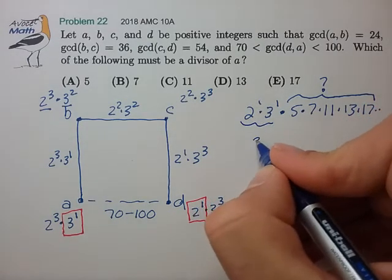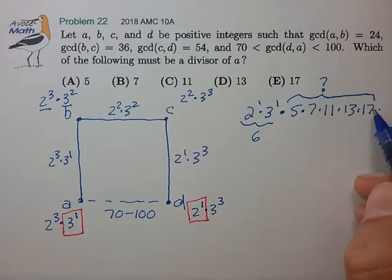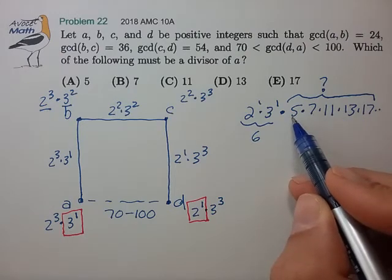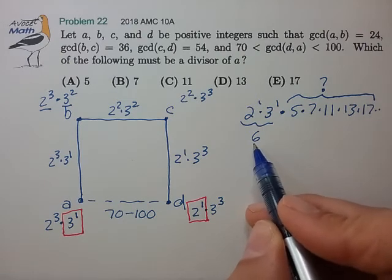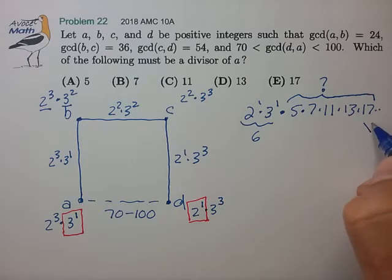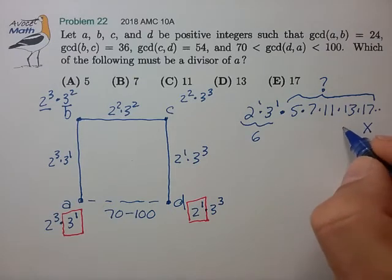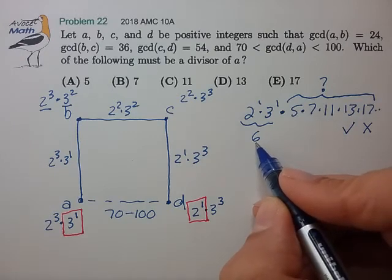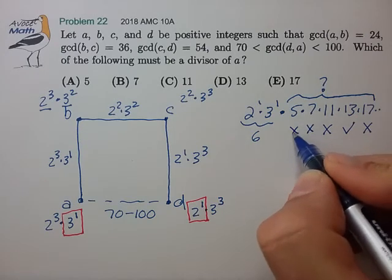Now 2 times 3, that's 6. Let's consider introducing these additional factors one at a time. If we introduce the factor of 17 all by itself, 17 times 6 is 102, so that's too large. If we introduce 13 all by itself, that does give us a greatest common divisor in the proper range, so that's a possibility. If we introduce 11 all by itself, that introduces a GCD of 66, that's too low. 7 is too low, 5 is too low.